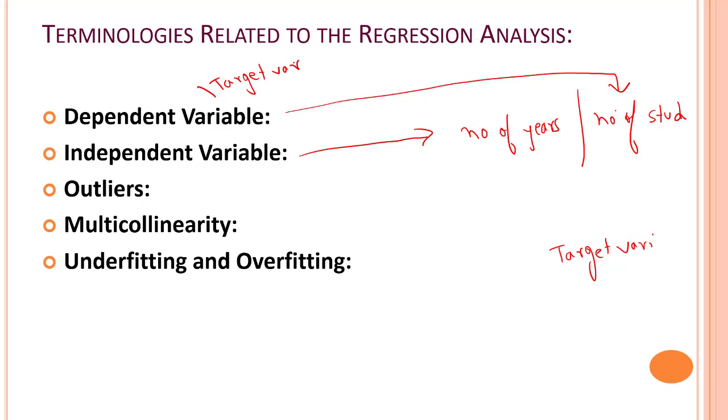Independent variable - the factors which affect the dependent variables or which are used to predict the values of a dependent variable are known as the independent variable. These are also known as predictors. In the future, if I use predictors or features, I am just mentioning independent variables, and if I am using target variable, the meaning is dependent variable.